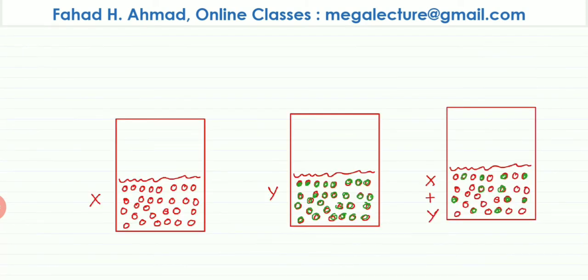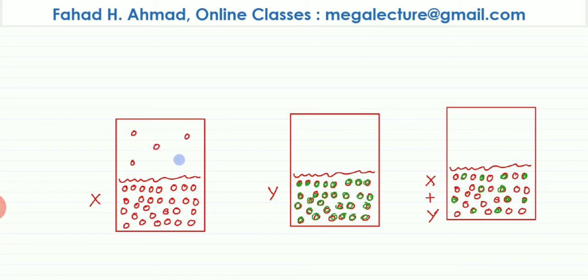I have drawn three containers: the first contains X, the second contains Y, and the third is the mixture Z. The particles of X are not attracting each other very strongly, so they evaporate very easily. The same is true for particles of Y — they also evaporate very easily.